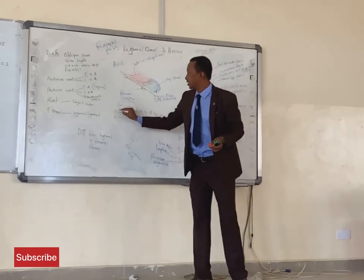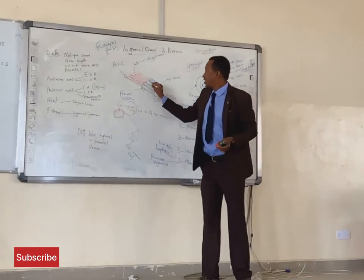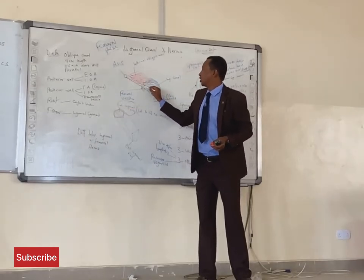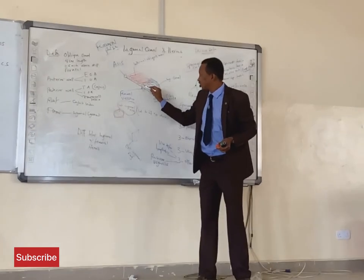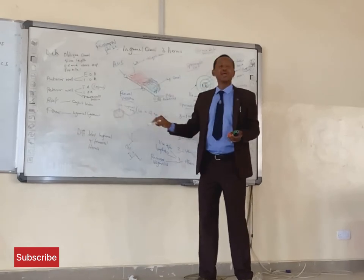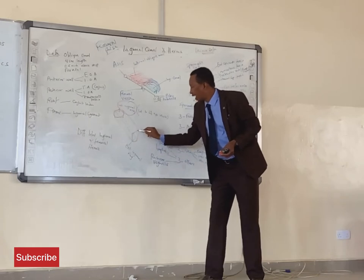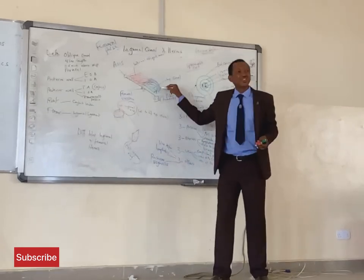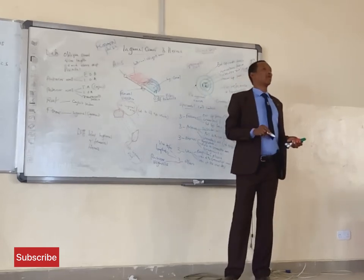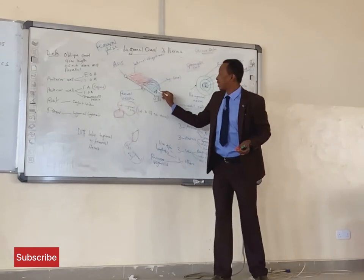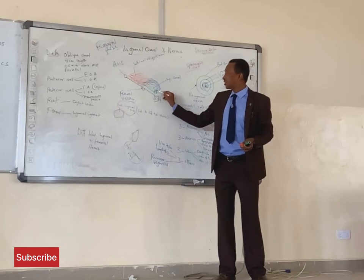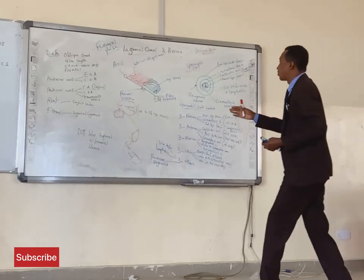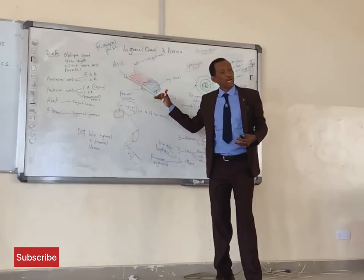The deep inguinal ring is the hole where the inguinal canal begins. This opening is located approximately 0.5 inch above the mid-inguinal point. The outer opening of the inguinal canal is called the external inguinal ring, which is a deficiency or defect in the aponeurosis of the external oblique muscle of the abdomen. So we have two rings: the deep inguinal ring internally and the external inguinal ring externally.